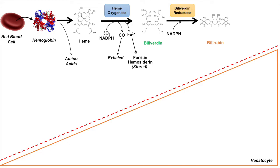Since both biliverdin and bilirubin are pigmented chemicals, this is actually the cause of the change in coloration of bruising. When you bruise, you'll have a breakdown of red blood cells, you'll get biliverdin, and then it'll be converted slowly into bilirubin — that's why you see that change in coloration in your tissue from a bruise.